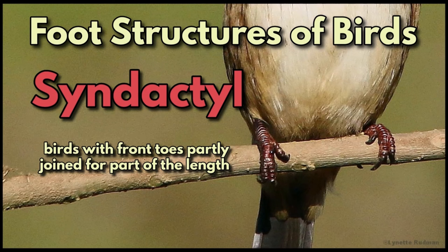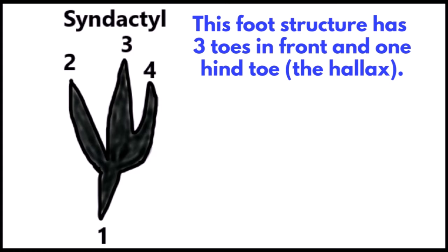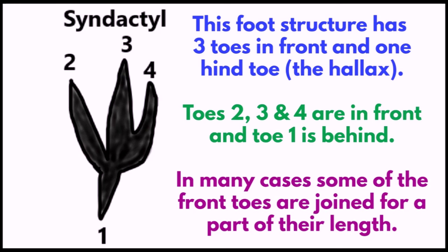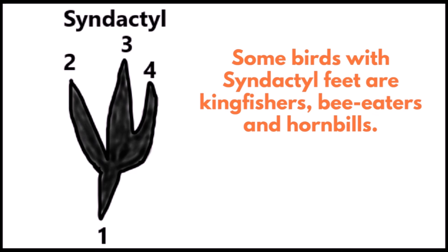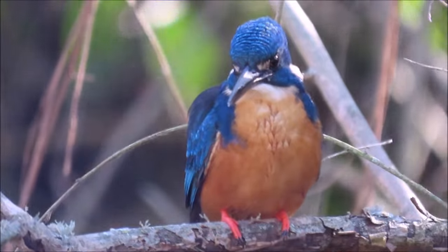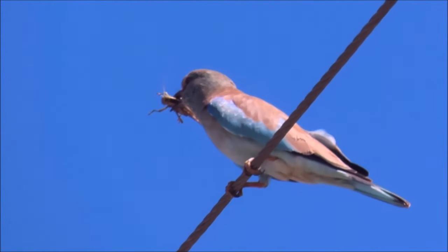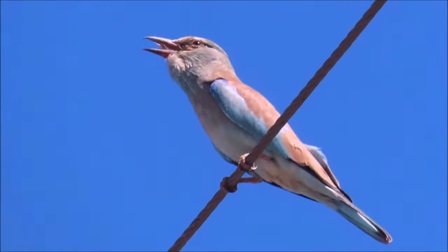Syndactyl: birds with front toes partly joined for part of their length. This foot structure has three toes in front and one hind toe — the hallux. Toes two, three and four are in front and toe one is behind. In many cases some of the front toes are joined for part of their length. Some birds with syndactyl feet are kingfishers, bee-eaters and hornbills. A half-coloured kingfisher shows two partly fused front toes on each foot, and this European roller grips onto a power line with its syndactyl feet.